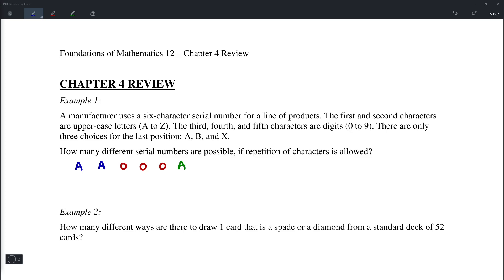In this example, we are to create serial numbers in the following format: 2 uppercase letters in a row, so there are 26 choices for each one, followed by 3 digits from 0 to 9, so that's 10 different possibilities, and the last character is either A, B, or X, meaning there are 3 choices.